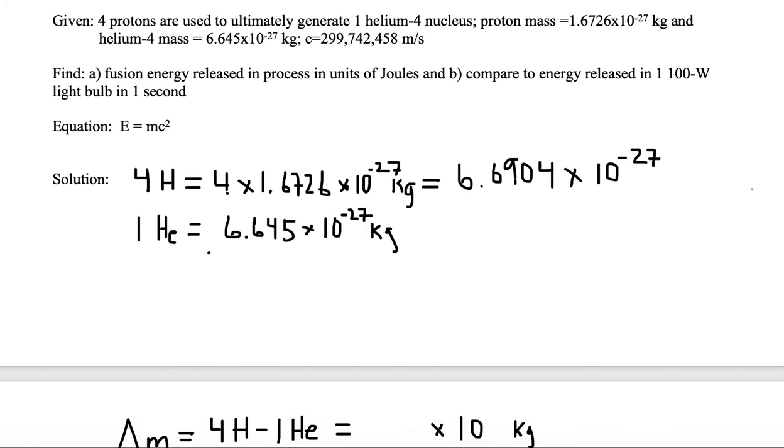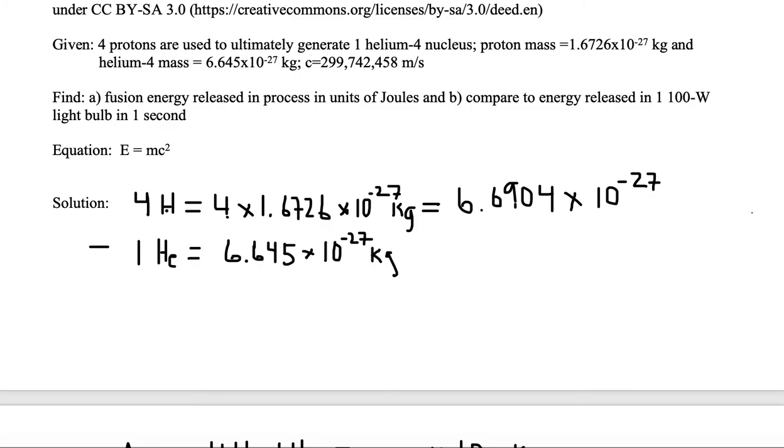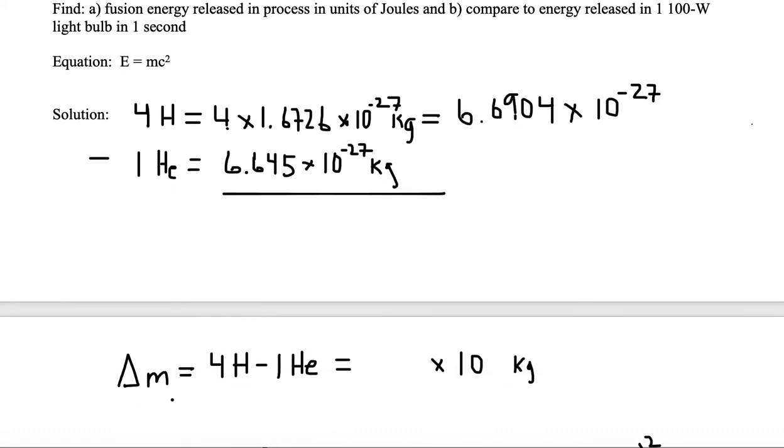So we need to find out that change in mass. So we're going to subtract off four hydrogen atoms, subtract off one helium, and we're going to subtract this one minus this one to get our result. We call that a delta m. So four hydrogen minus one helium.